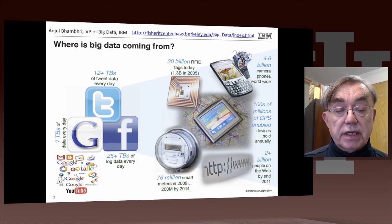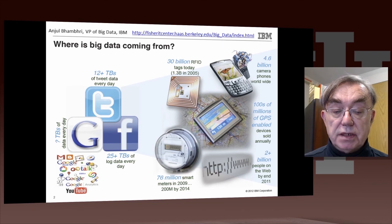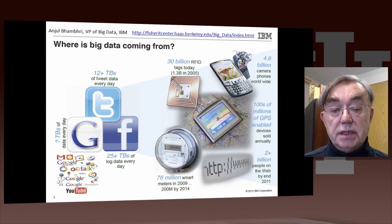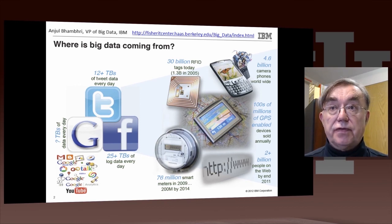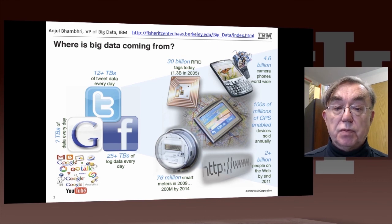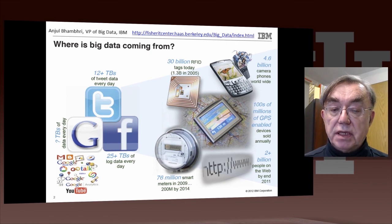In the energy area, we have 76 million smart meters in 2009, 200 million smart meters in 2014. So this is driving the field of energy informatics, which is how we produce more efficient, responsive power, and do not have brownouts and things like that, using the data on usage in intelligent fashions.